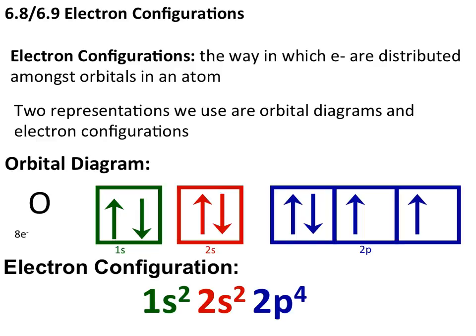That is one diagram type. Another way to represent electron configurations is through simple electron configurations. Instead of drawing the boxes out, we write out the orbital energy level as well as the type of orbital, and we have a superscript that represents the number of electrons present in each orbital type. The 1s orbital has two electrons inside it, so we have a superscript of 2.